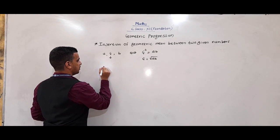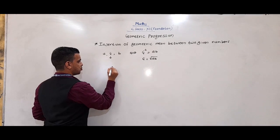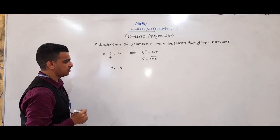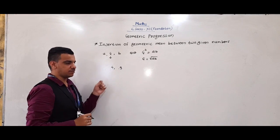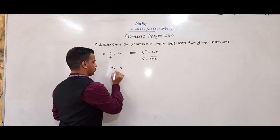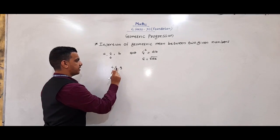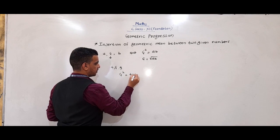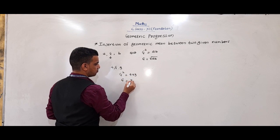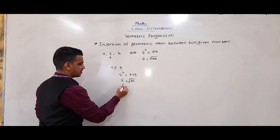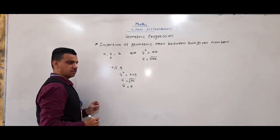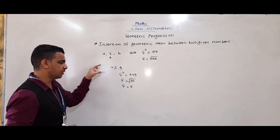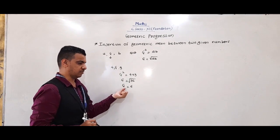Suppose we have to find the geometric mean between 4 and 9. If we have to find a single geometric mean between 4 and 9, suppose G is the geometric mean. So G² = 4 × 9, G = √36, that is G = 6. So 6 is the geometric mean between 4 and 9.